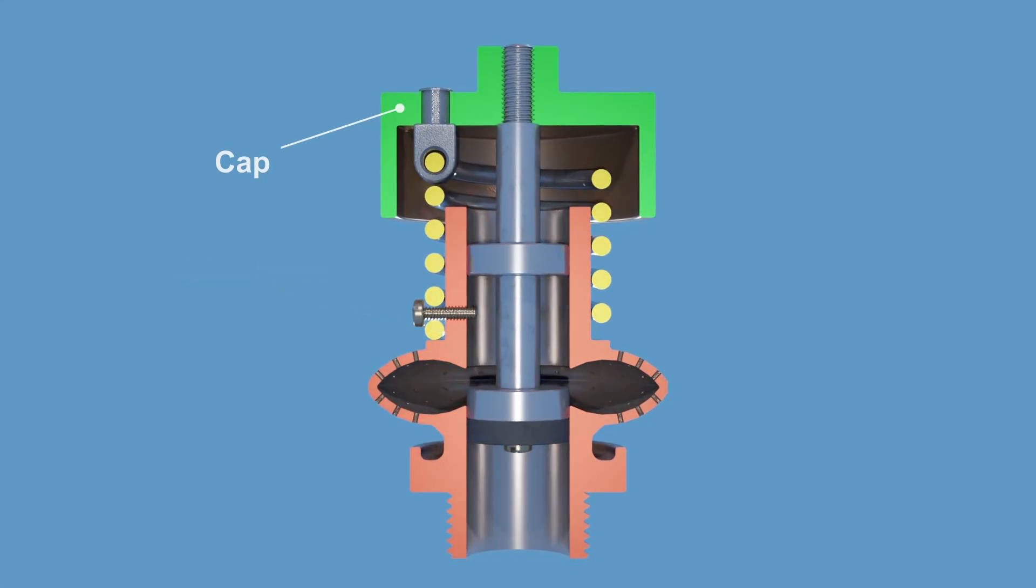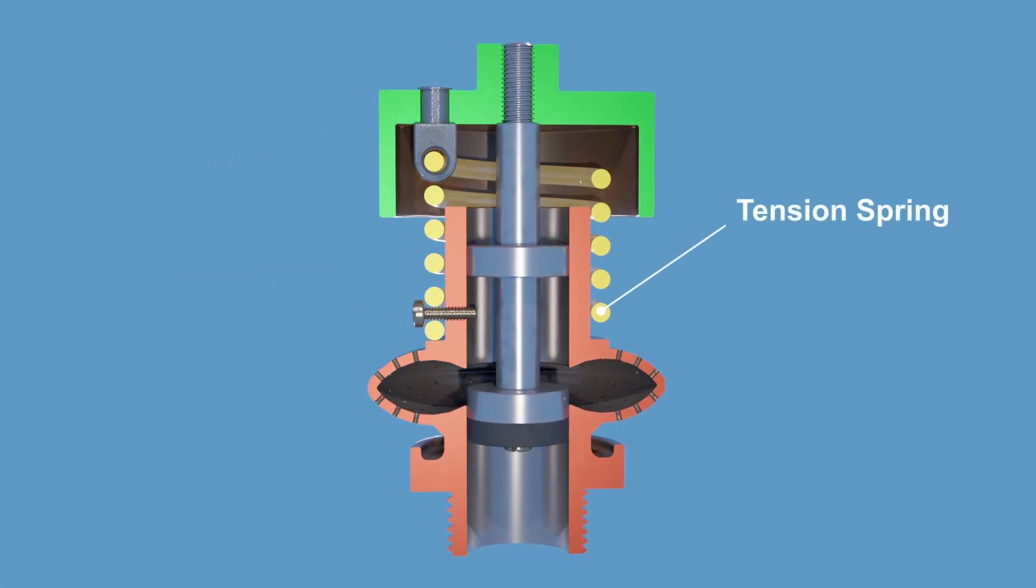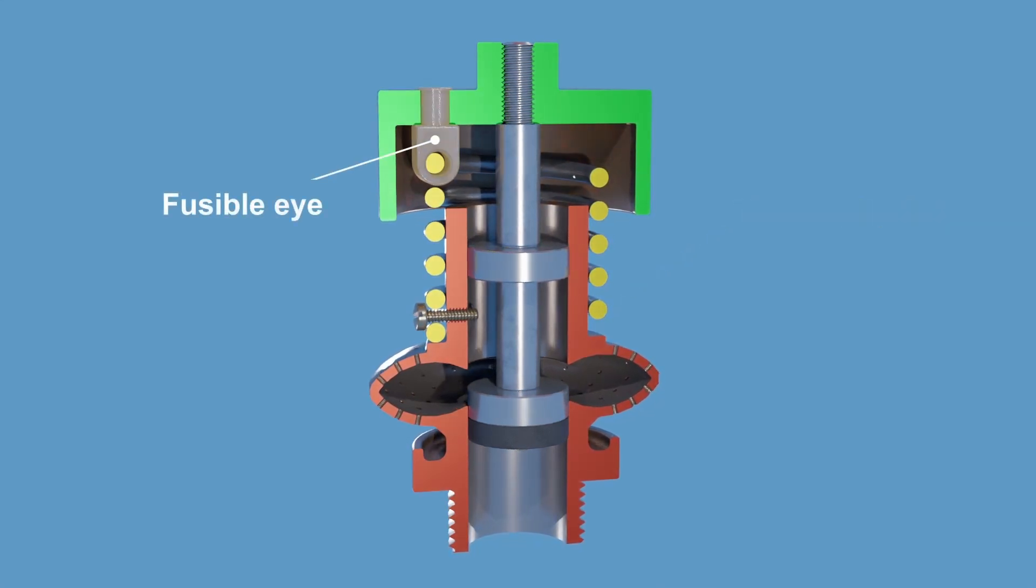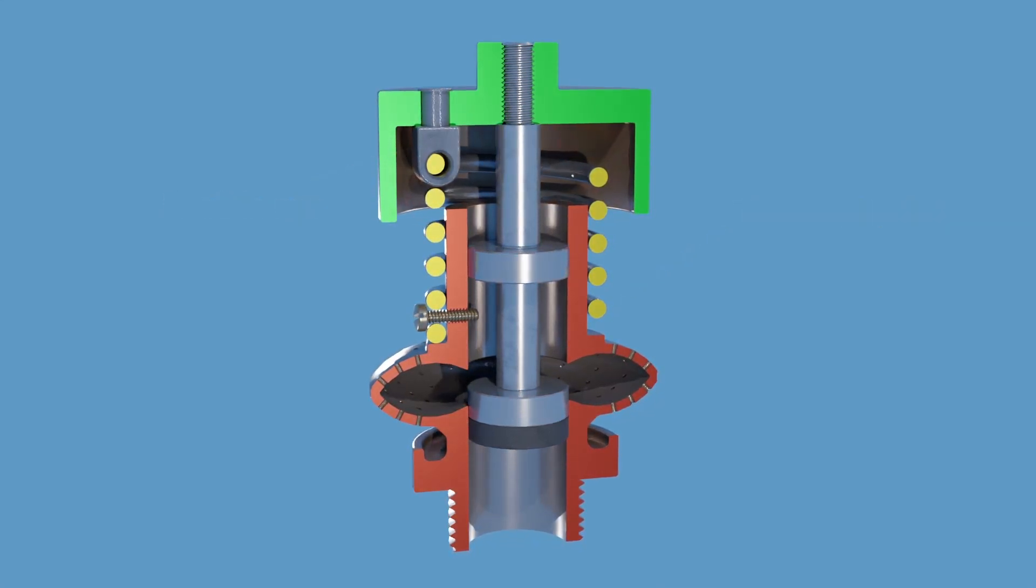The valve is held closed by a tension spring wrapped around the sprinkler body and attached to the cap through a fusible eye. This eye is made from a material that melts at a relatively low temperature.